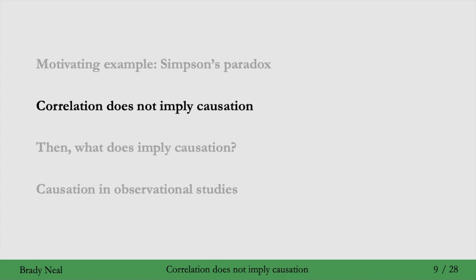That concludes the motivating example — Simpson's paradox. A quick recap: we prefer treatment B when condition is a cause of treatment, and we prefer treatment A when treatment is a cause of condition. You have to decide which treatment to give your whole country — it's an important issue that will decide the lives of many people — and the decision hinges crucially on the causal structure of the problem. With that, let's get into correlation does not imply causation.